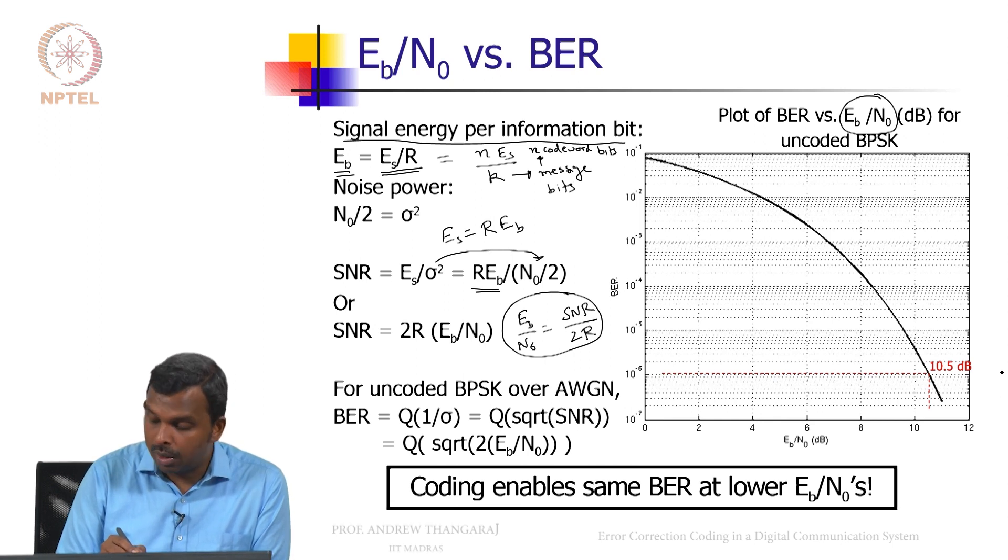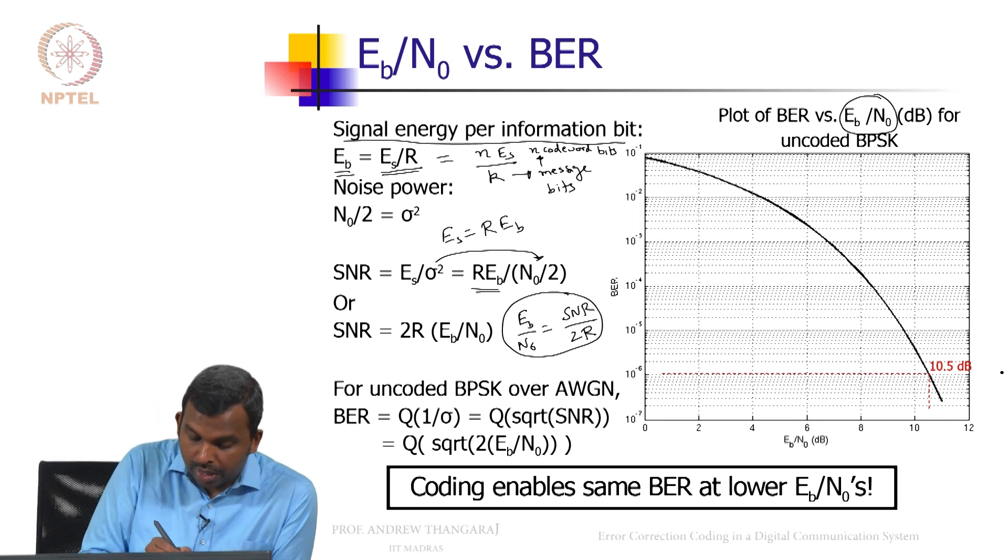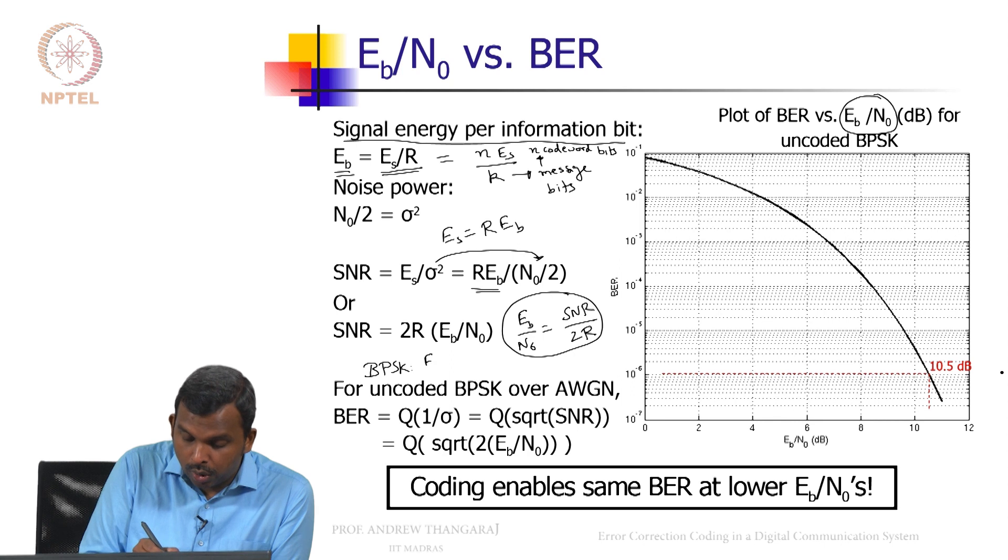So in the BPSK case, we know SNR is 1 by sigma square. So for BPSK, Eb over N0 is 1 by 2 R sigma square.